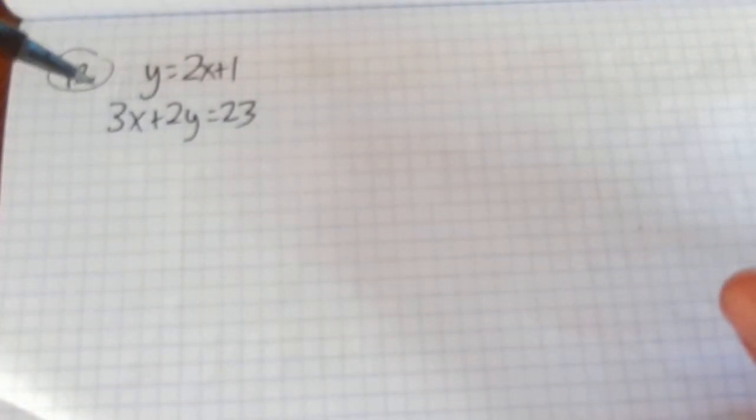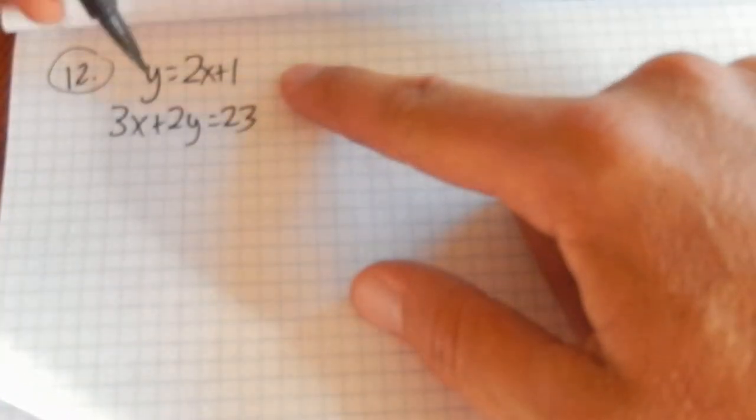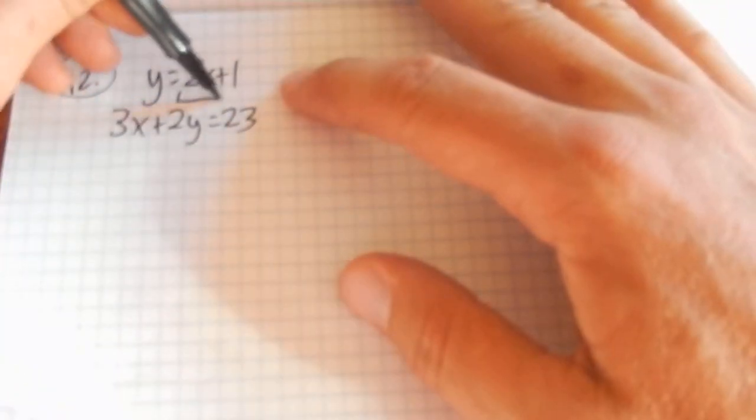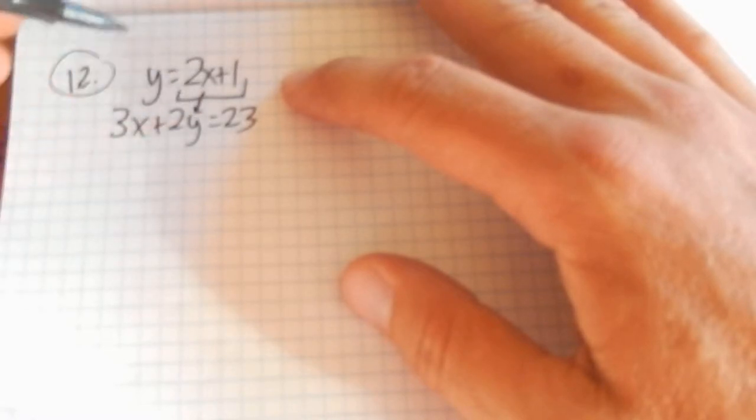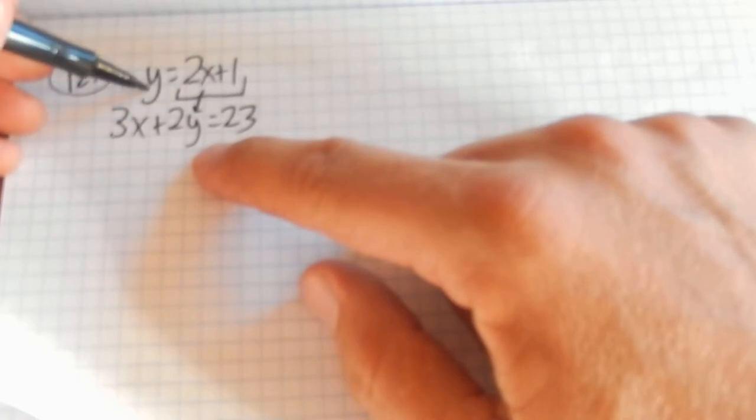And looking at this system, it's set up really well for substitution right now. So what I can do is I know what y is. y is 2x plus 1. So 2x plus 1 can take the place of y. They're equal to each other.